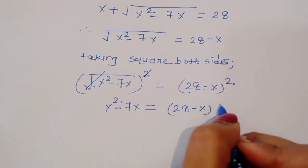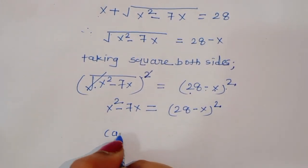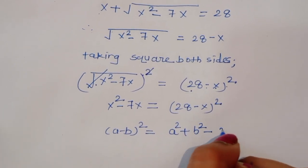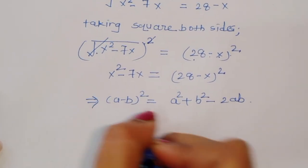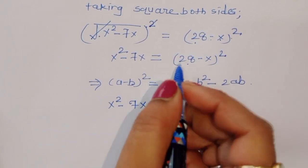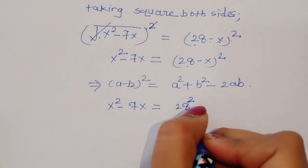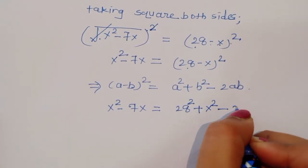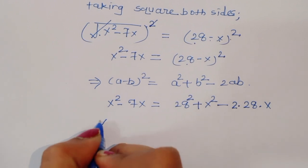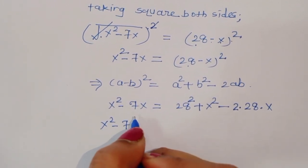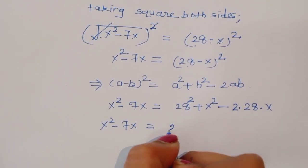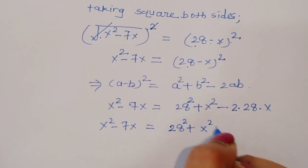We know the formula: a minus b whole square is equal to a squared plus b squared minus 2ab. Using this formula, x squared minus 7x is equal to 28 squared plus x squared minus 2 times 28 times x, which gives us x squared minus 7x equals 28 squared plus x squared minus 56x.